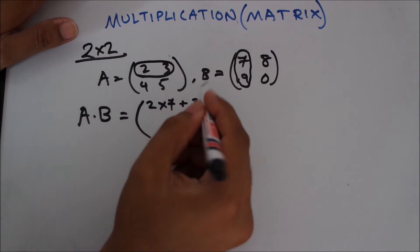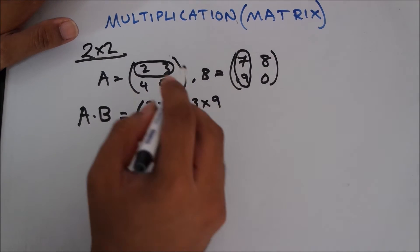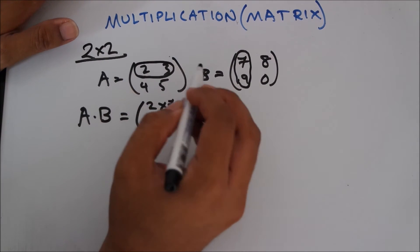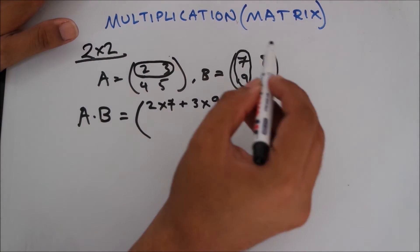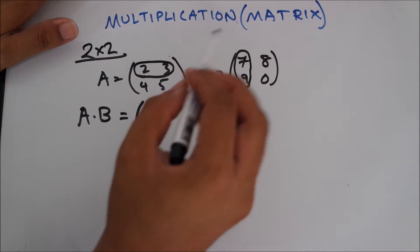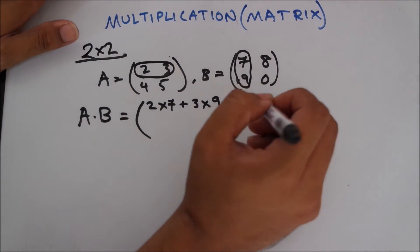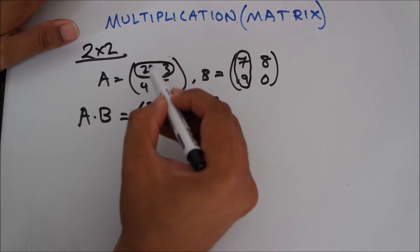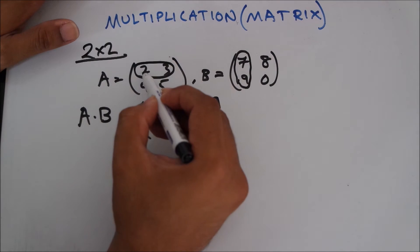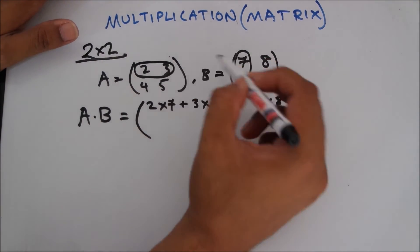We multiply by row into column. So you multiply this into this and then this into this, and then you move on to this column, the second column. But you still have to multiply the numbers of first row to the second column. So now you have to multiply 2 into 8 and 3 into 0. Remember to put the plus sign in between.